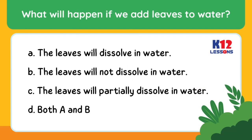What will happen if we add leaves to water? A. The leaves will dissolve in water. B. The leaves will not dissolve in water. C. The leaves will partially dissolve in water. D. Both A and B.